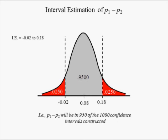That is, p1 minus p2 will be in 95% of all confidence intervals constructed. Since the confidence interval contains 0, the ad campaign probably had no effect on product awareness.